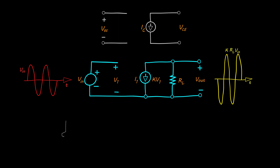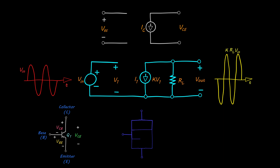Today we will talk about one of those devices that can work as a voltage-controlled current source: the bipolar junction transistor, simply BJT.